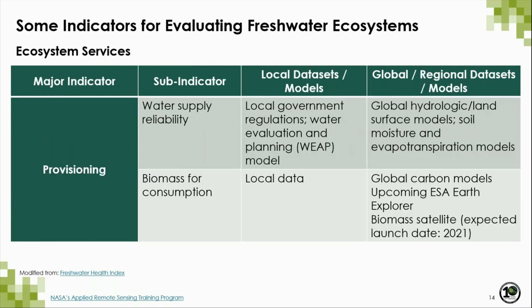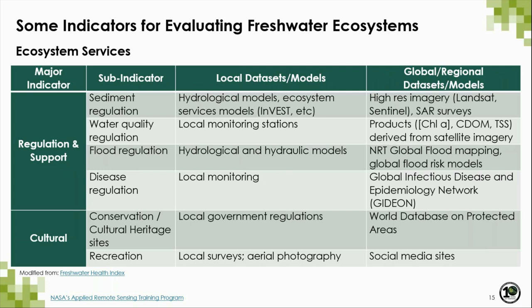For ecosystem services, provisioning can be measured in terms of water supply reliability and biomass available for consumption, using local datasets or models such as the Water Evaluation and Planning Model, or WEAP, and local data complemented with global hydrologic and evapotranspiration modeling efforts. The European Space Agency will be launching soon the Earth Explorer biomass satellite, which will provide global maps of carbon stored in forests and changes with time. Sub-indicators for regulation include sediment, water quality, flood, and disease regulations, assessed by complementing ecosystem models such as InVEST, data from local stations and aerial photography, with satellite data from instruments such as synthetic aperture radar or visible data, and global flood mapping efforts.